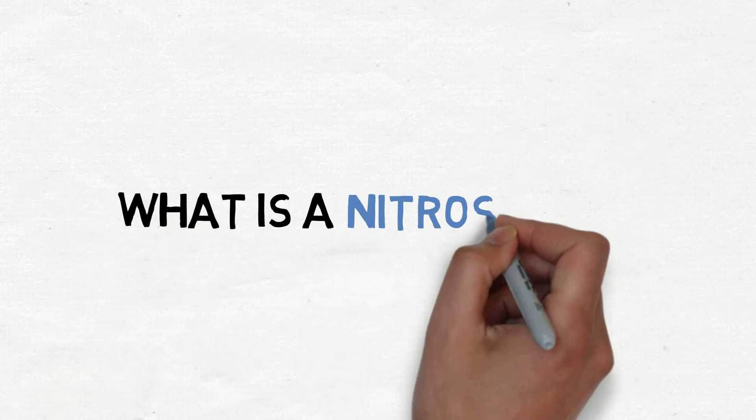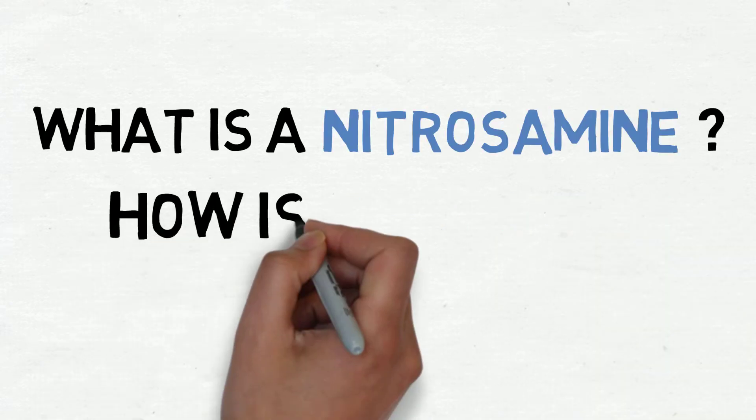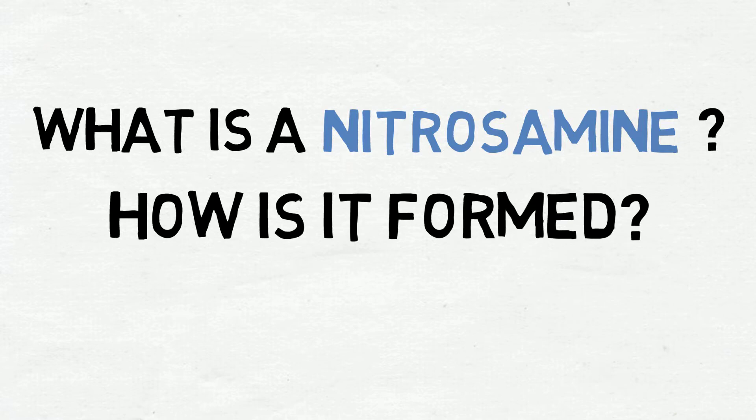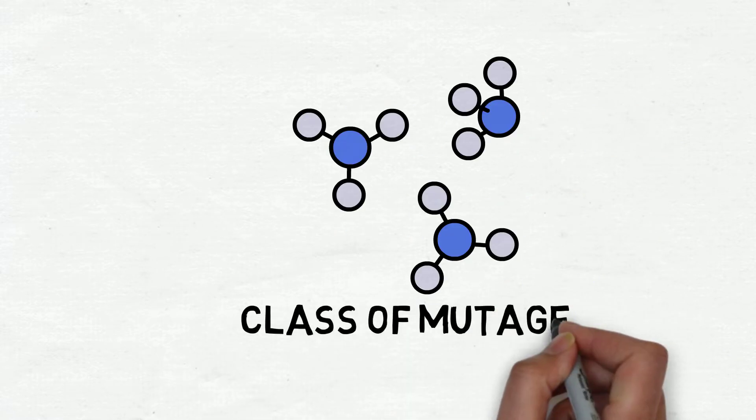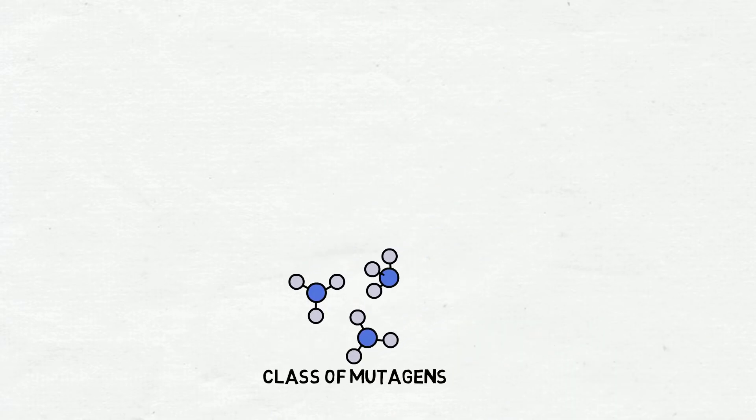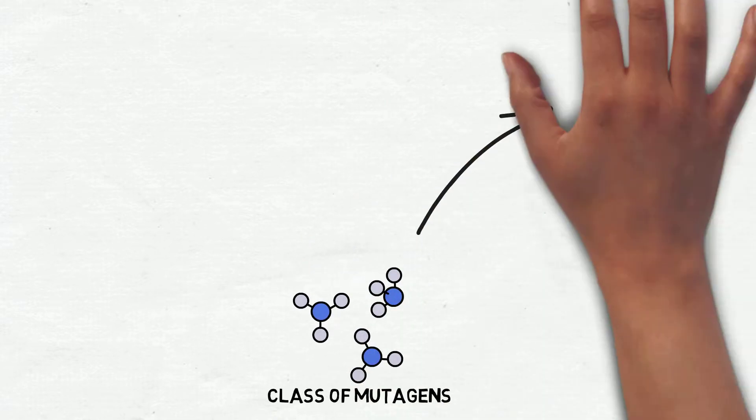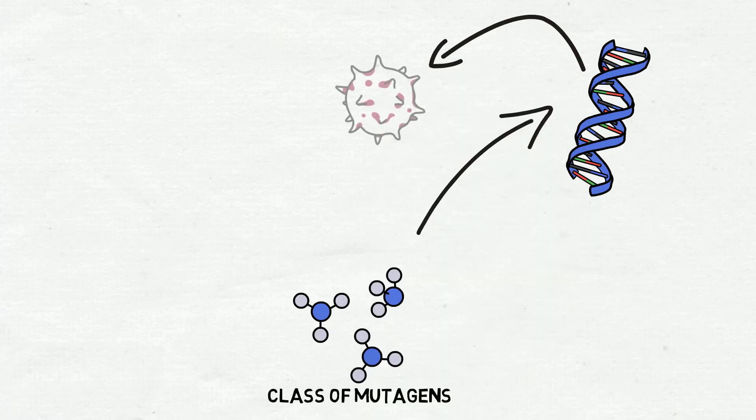What is a nitrosamine and how is it formed? Nitrosamines belong to a class of mutagens, which are compounds that are able to make mutations in the DNA, and sometimes these mutations can result in cancer.